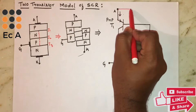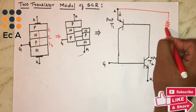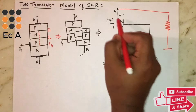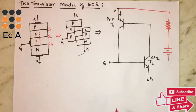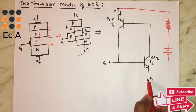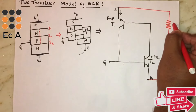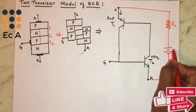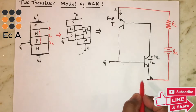Now let us bias the transistors. The anode and cathode should be forward biased, so we will take a resistor RL and connect the positive terminal towards the anode and the negative terminal towards the cathode. This has some voltage VAK between anode and cathode.